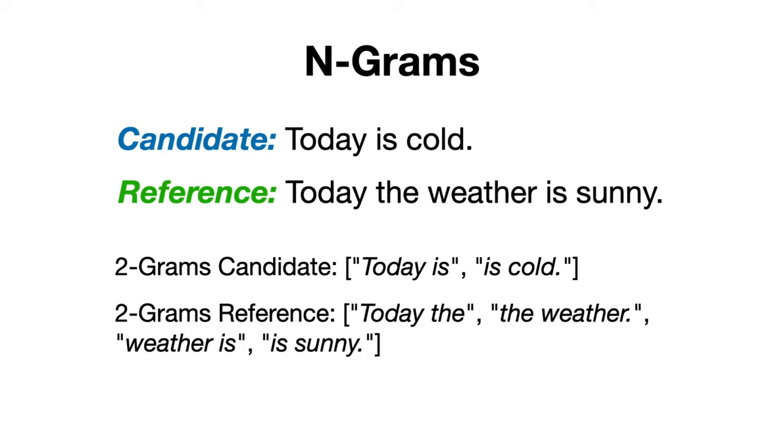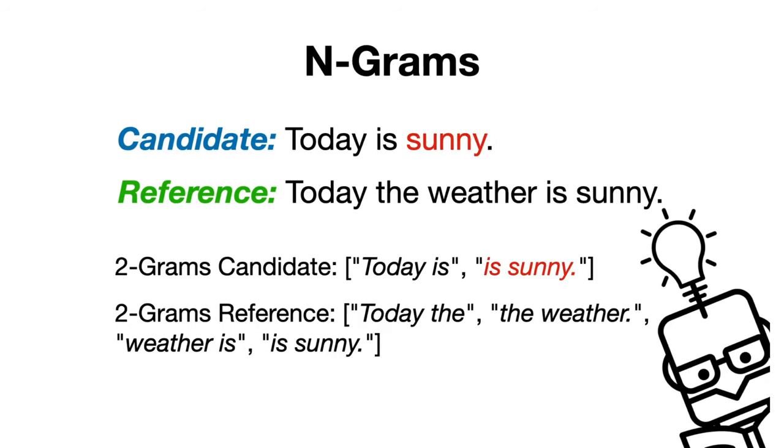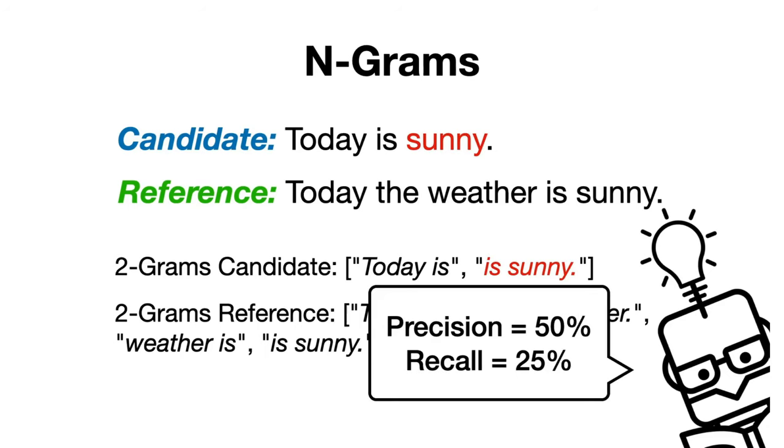'weather is,' and 'is sunny' as our reference bigrams, so no matches between the predicted and the reference text, giving us a zero precision and recall. On the other hand, if we replace 'cold' with 'sunny' in the candidate sentence, we would get a precision of 0.5 and a recall of 0.25.